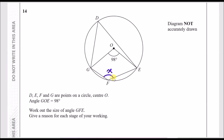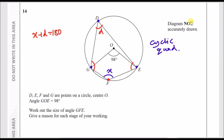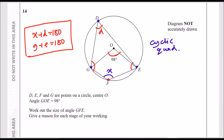The most important part is your explanation. First, spot that this is a four-sided shape inscribed in a circle, hitting four points — this is called a cyclic quadrilateral. The key property is that opposite angles add up to 180 degrees. So x plus D equals 180, and similarly G plus E equals 180.